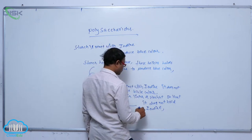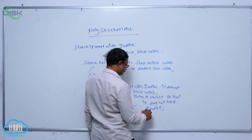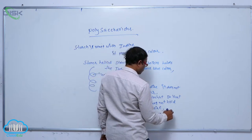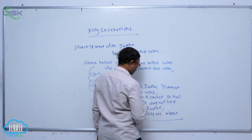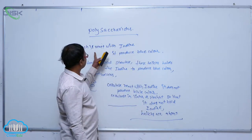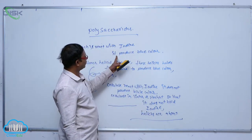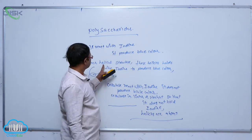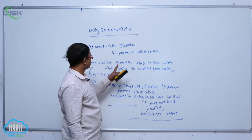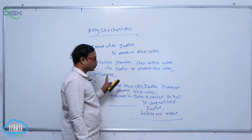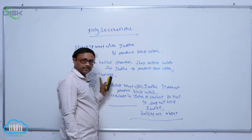Because helicals are absent in cellulose, that is an important point. Starch reacts with iodine and produces blue color because starch has a helical structure — these helicals hold the iodine to produce blue color.